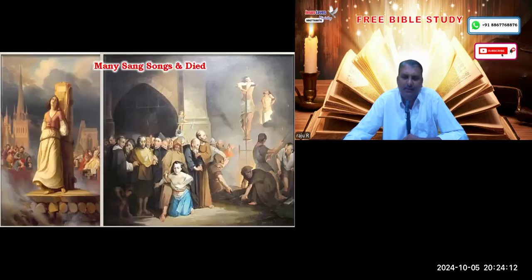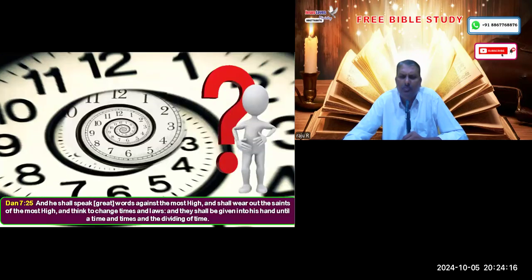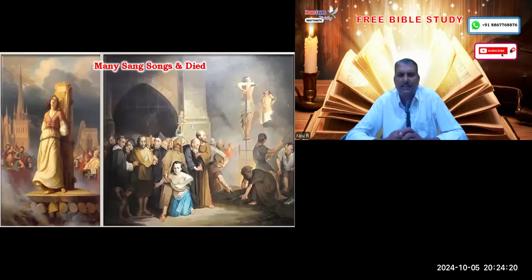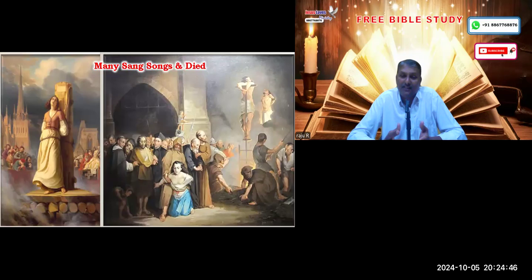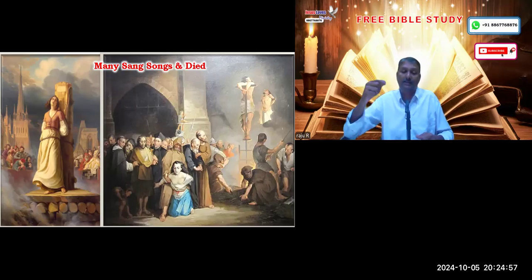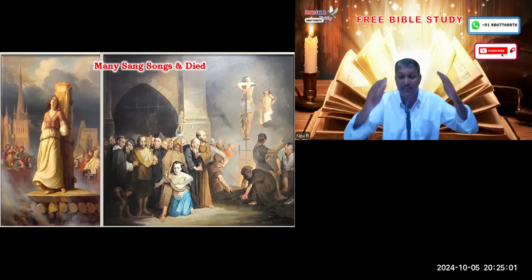Many godly saints who were persecuted, burned alive, put in dungeons, and fed to lions sang beautiful songs during those times — songs we still sing today, like 'I Surrender All.' These songs were sung by the brethren as they were dying to increase their faith and stay strong in the Lord. This is how they changed the laws, changed the doctrines of the Bible, persecuted God's children — this is the great Antichrist system.